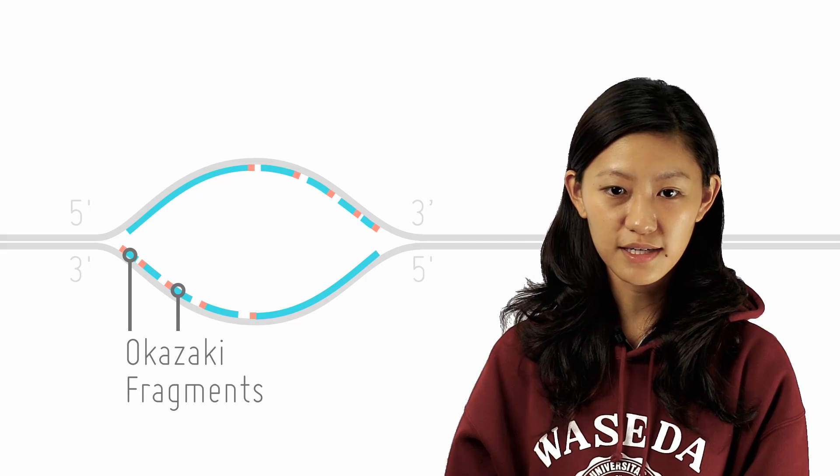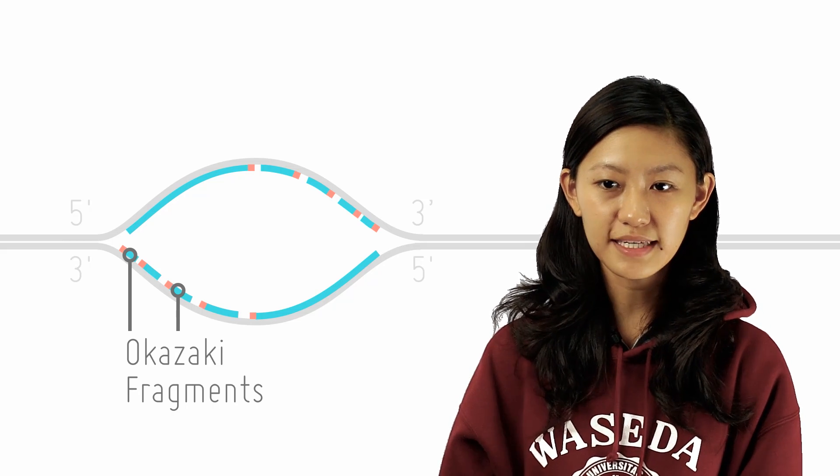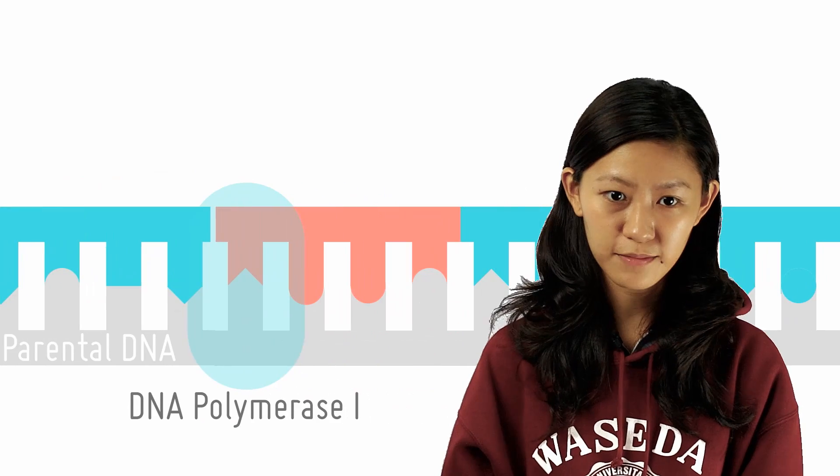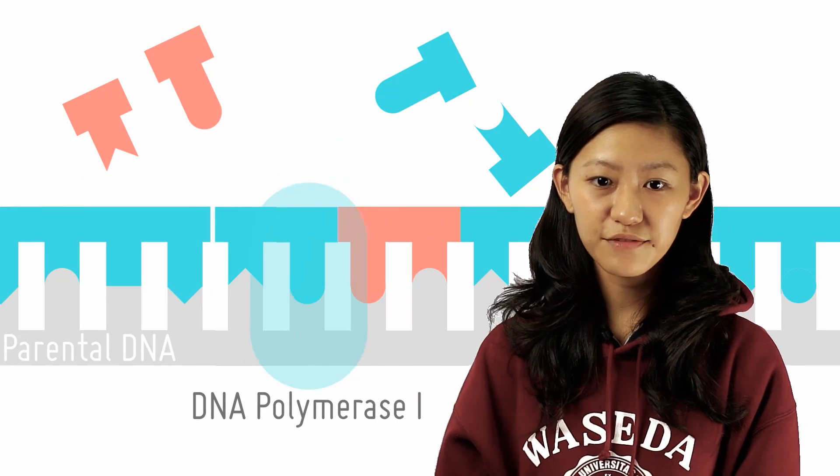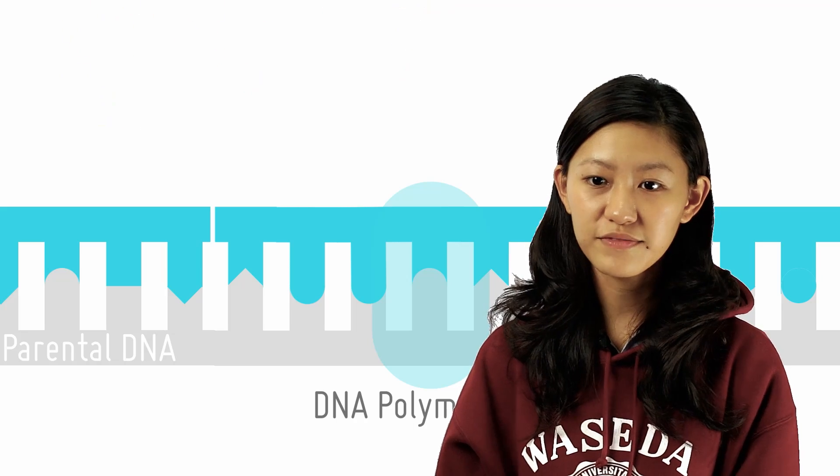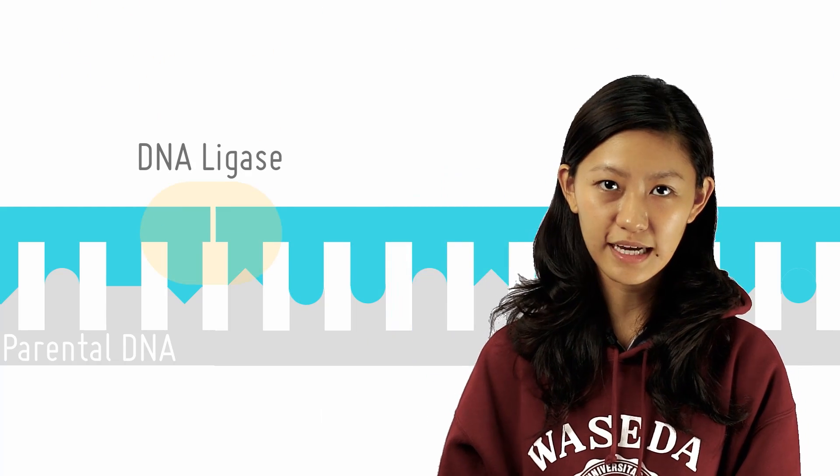Each Okazaki fragment is initiated by an RNA primer before DNA polymerase adds DNTPs to the 3' OH end of the primer. Similarly, a different DNA polymerase excises RNA primers, replacing them with DNTPs, and DNA ligase then joins the fragments with phosphodiester bonds.